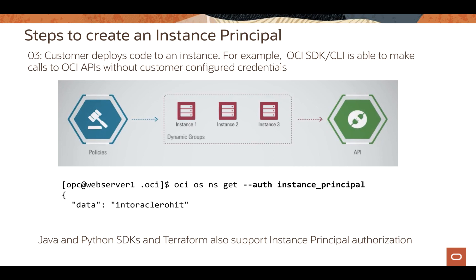The policy defines what permissions the member instances of the dynamic group should receive. The policy syntax is similar — you use the 'allow' keyword, but instead of 'group' you write 'dynamic group', then provide the group name and define the privileges. Once these policies are written, applications running on your OCI instances can make API calls depending on how you have defined the policies against your dynamic group.